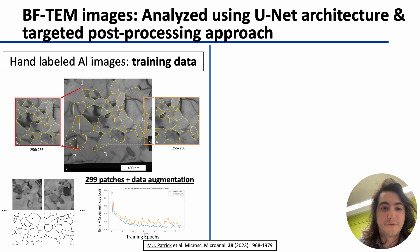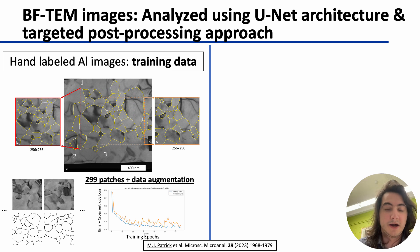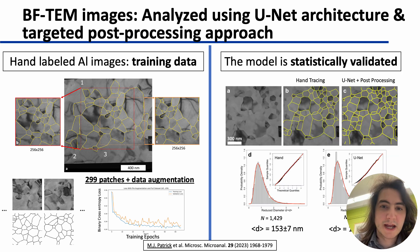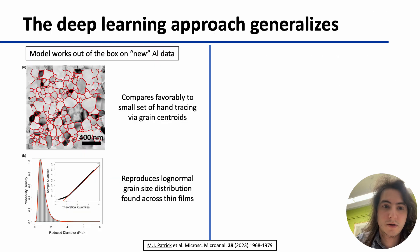Instead, we leveraged the dozens of images left over from hand tracing in our group to train a machine learning model based on a U-Net architecture. We couple this with a targeted post-processing approach and are able to demonstrate statistical similarity between hand tracing results and results obtained via the U-Net and post-processing approach.